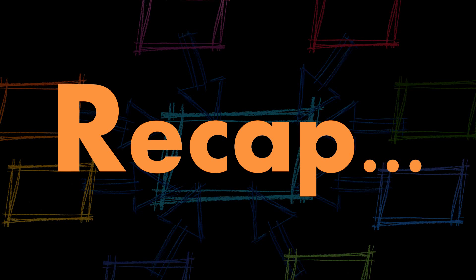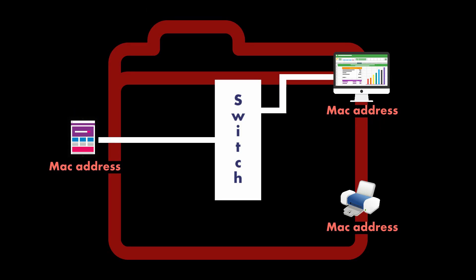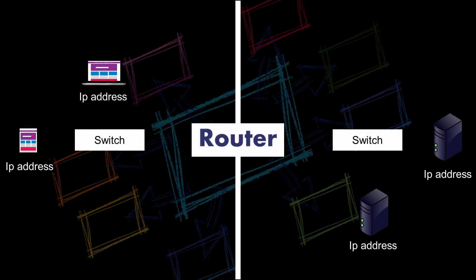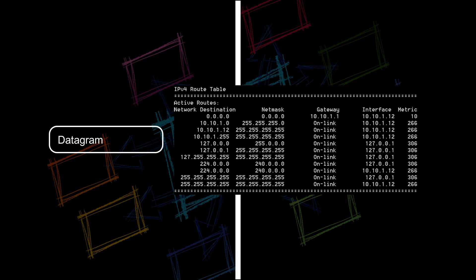So let's recap on what is a switch and what is a router. Switches are used for connecting multiple devices, creating what are called local area networks. When sorting traffic, a switch must rely upon the MAC addresses of its local devices. Routers act like gateways between networks for incoming and outgoing traffic. To correctly sort this traffic, a router will rely upon its routing table and the destination IP addresses of incoming packets.